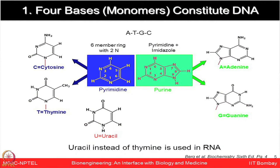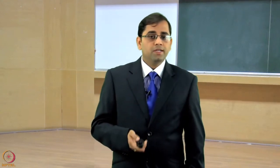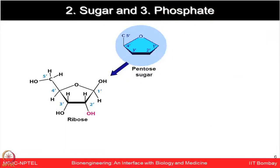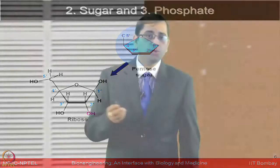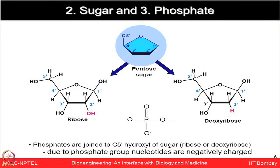Uracil is unique because it is found replacing thymine in the case of RNA. Regarding the sugars, there are two involved: ribose and deoxyribose, both having the pentose sugar backbone. On the second carbon, ribose has a hydroxyl (OH) group whereas deoxyribose has hydrogen. The third important component is a phosphate chain joined at the C5 carbon. Because of this phosphate group, nucleotides are negatively charged, a property heavily used in DNA electrophoresis.